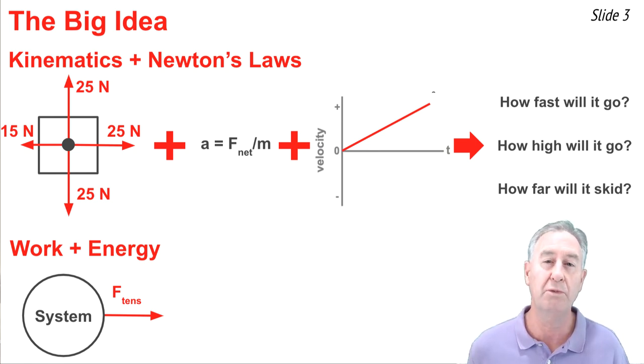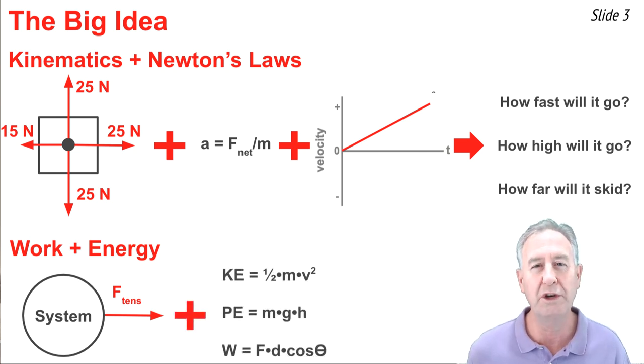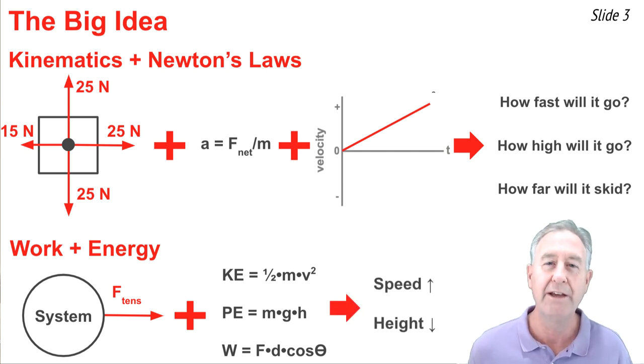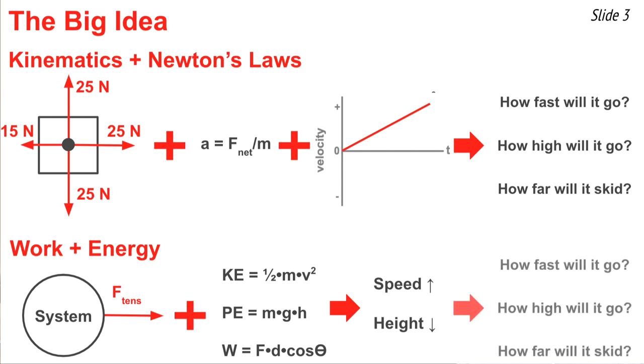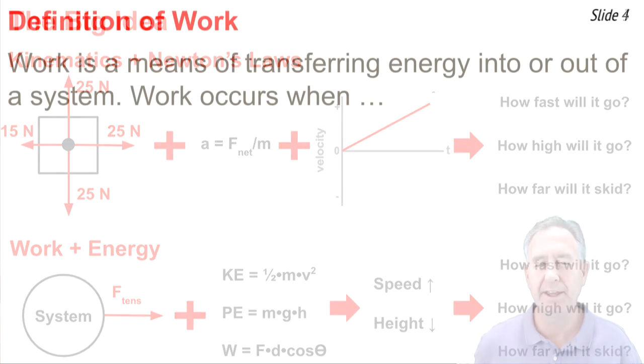We do this in order to determine what is happening to the kinetic or potential energy of the object, so that we can predict: will the speed increase or decrease, will the height increase or decrease, or will these remain the same? And finally, we want to determine the answers to questions like: how fast will it go, how high will it go, and how far will it skid?